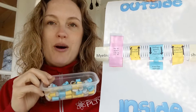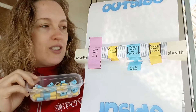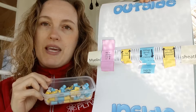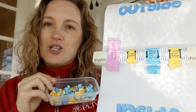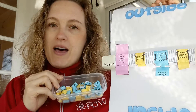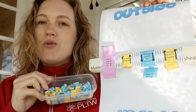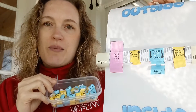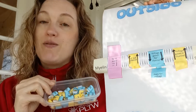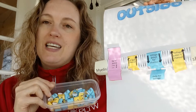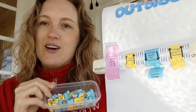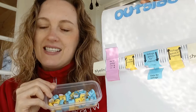I'm going to be teaching you about action potentials using this origami organelles nerve impulse model. You don't need your own model to understand what I'm going to tell you, but if you want one you can check the links down below the video to see how to get this.